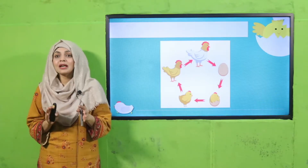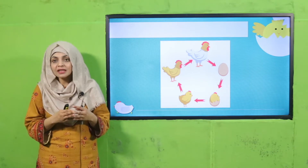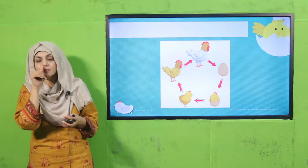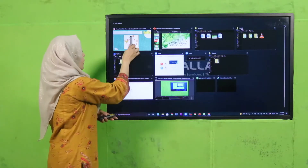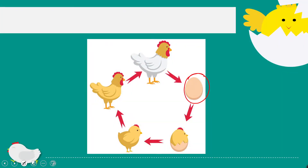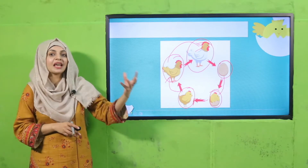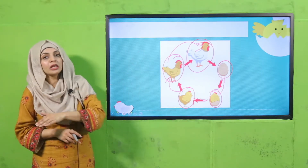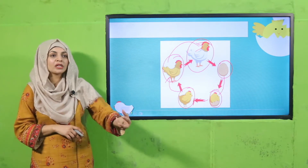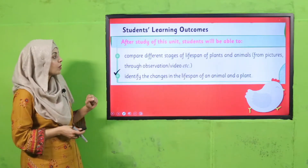Today we will discuss the life stages of animals, because animals are also living things and they also have life stages just like plants. In plants it starts from a seed, and in animals it starts from an egg or a live baby. Then it develops — growth and development happens, different body parts start growing. If it's a bird, feathers start growing. Then it becomes a mature animal and is ready for reproduction. So these are the life stages of animals, from birth till death.